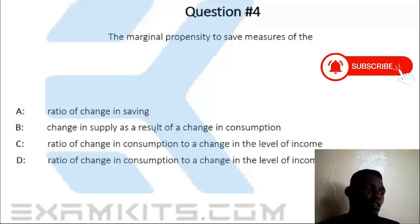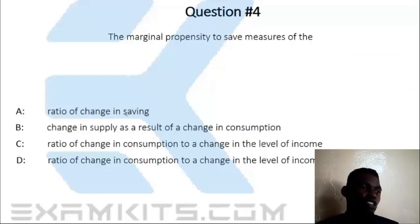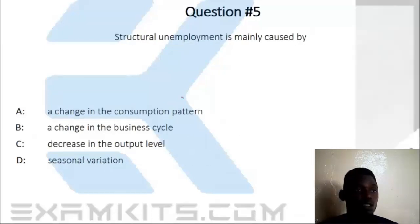The ratio of change in consumption to change in income is not correct. The correct answer is A — the ratio of change in savings — because MPS stands for Marginal Propensity to Save.